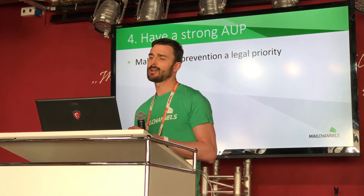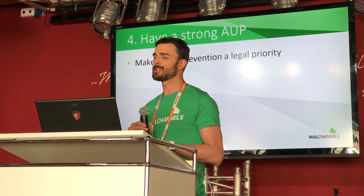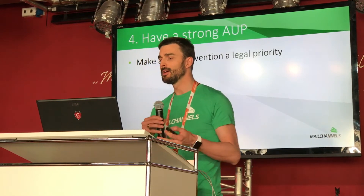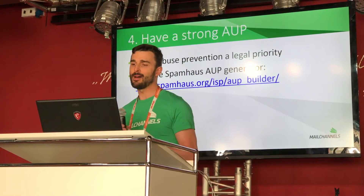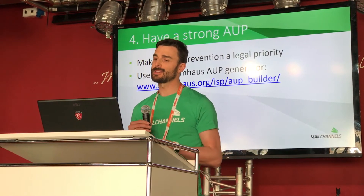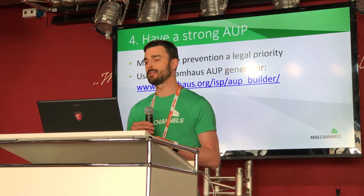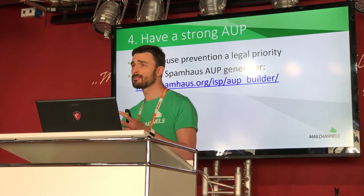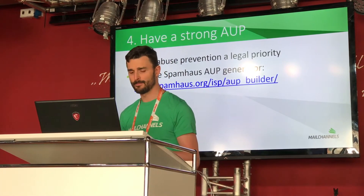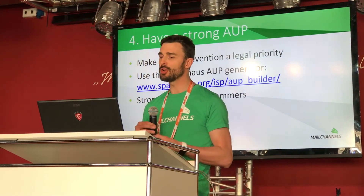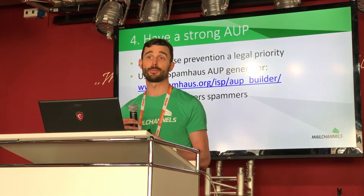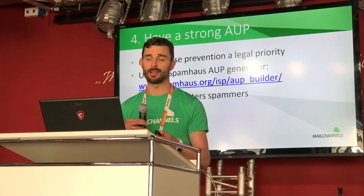Number four: have a strong acceptable usage policy. Once you detect a spammer in your network, you're going to need some strong legal tools so that you can get them off of your network. Even if you already have an AUP, Spamhaus has an AUP generator that gives you a very decent policy that you can cut and paste into your own terms and may fill in the gaps. Spammers look for hosting providers that have friendly acceptable usage policies, so by having an aggressive AUP, you're going to deter spammers from signing up with your services.